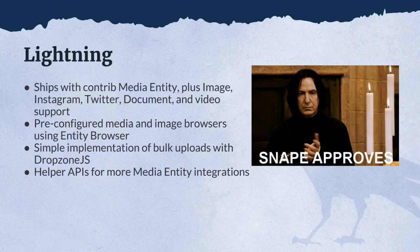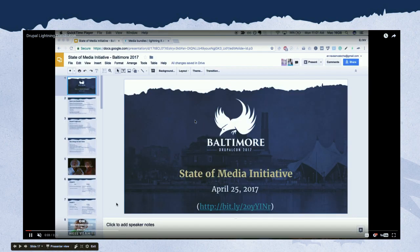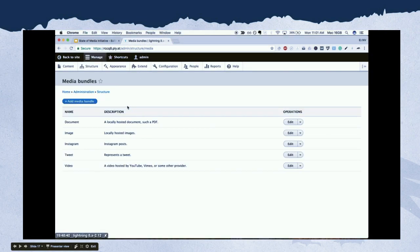Lightning is another distribution, a little more sparse than Thunder. It ships with a lot of the same stuff — the media entity module plus integrations for Instagram, Twitter, files, and so on. It has a media browser built on top of entity browser, bulk uploads with DropzoneJS, and some helper APIs that improve the developer experience. It's also wizard approved. This inspires our approach to putting media in core — what these two distros have put together using contrib parts makes up kind of our MVP.